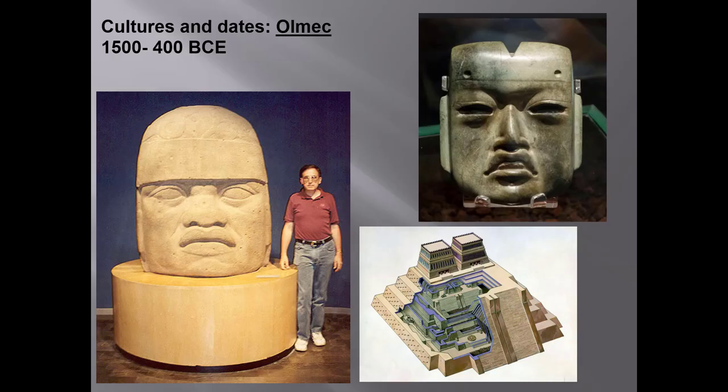We only encounter the Olmec indirectly through the Aztec veneration of this small mask, but it's viewed as the mother culture of Mesoamerica. Note the cleft in the mask's head, echoed by the two temples at the top of the Templo Mayor, where it held a treasured spot. Here again we see an expression of duality. So what was the mask made of? Where was it found? And what does Aztec possession of this mask indicate?